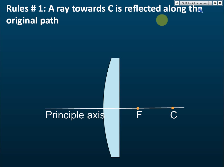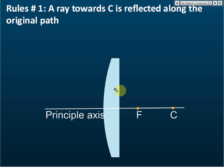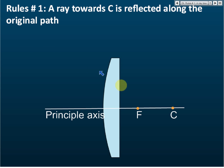Rule number one: a ray towards C is reflected along the original path. Why towards C? Because C is behind the mirror, so the light ray cannot reach C. It can only move towards C, and then it will be reflected along the original path.